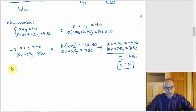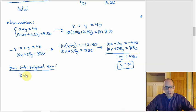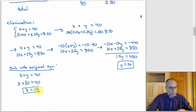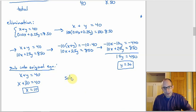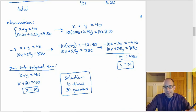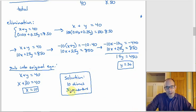So the solution is 10 dimes and 30 quarters. To check: 10 times 0.10 is $1.00, and 30 times 0.25 is $7.50. One plus 7.50 is $8.50, so it all works out. For substitution, you'd let Y equal 40 minus X and substitute into the value equation, ultimately getting the same answer.